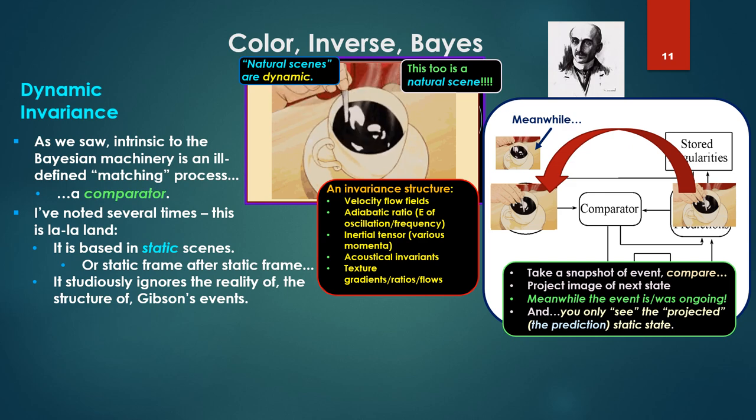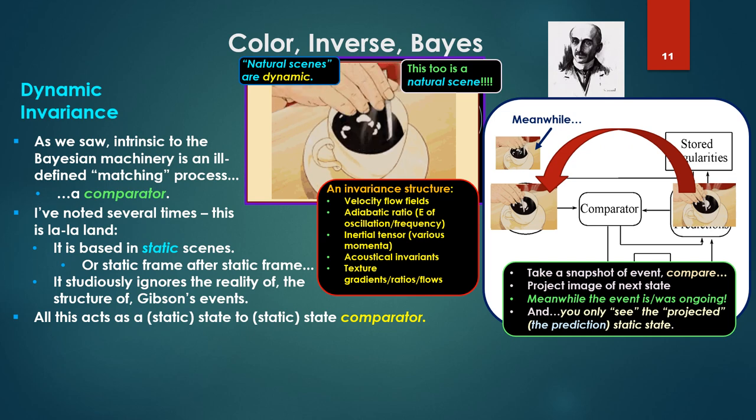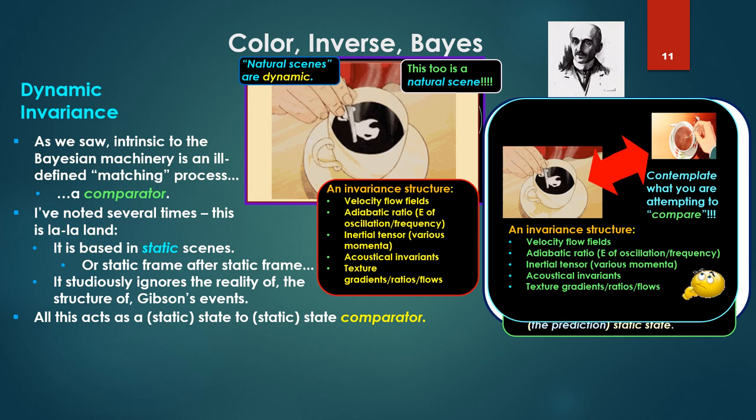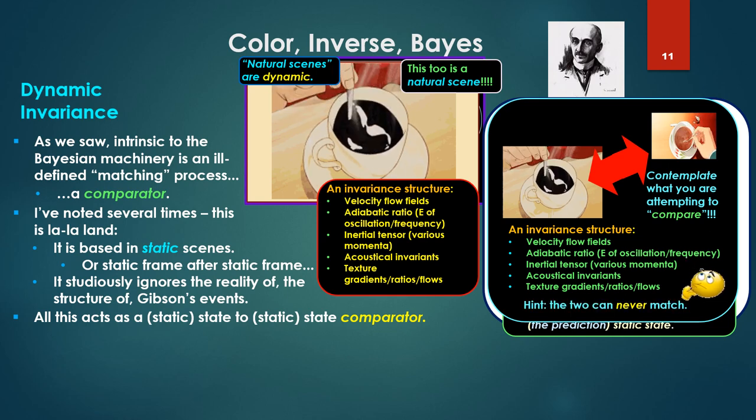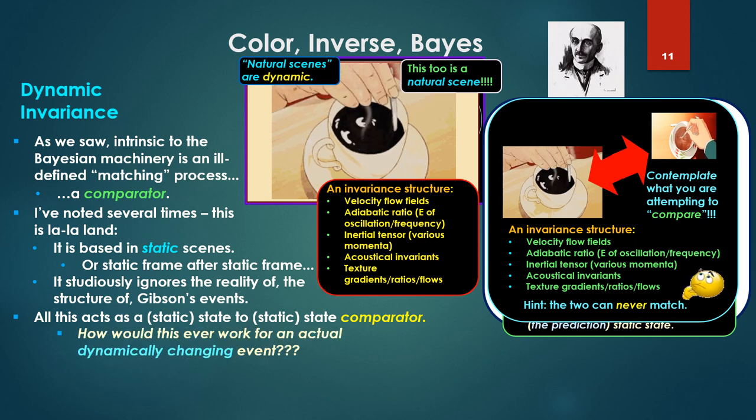Meanwhile the event is ongoing. And again you're only seeing, supposedly, the projected prediction of the static state if there's a match. So as I said, static state, the static state comparator. But contemplate what it is you're attempting to compare. These two invariance structures, dynamically changing, different ratios of energy, frequency, oscillation. How are you syncing these events up and matching these quantities? The two can never match. So how would this ever work for a dynamically changing event?